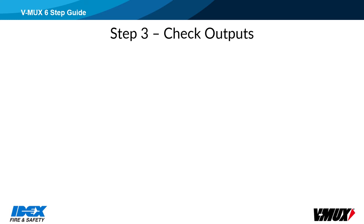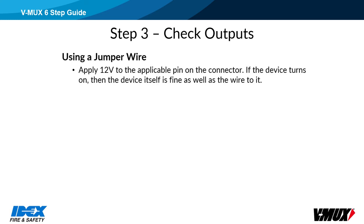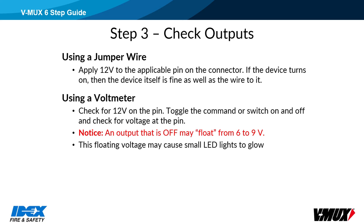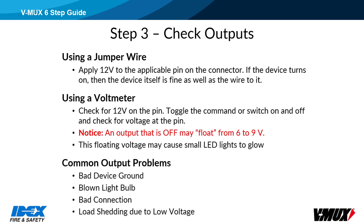Step 3: Check outputs. Remove the output connector from the node and apply 12 volts to the wire going to the device that is not working. Use a source protected with a fuse or breaker in case there is a short circuit. If the device turns on, you know the device and wiring is good. Further investigation is required to determine why the node is not supplying the voltage. Use a voltmeter to check output voltage — when the output is on, it should be near battery source voltage. An output that is off with no load attached may have a floating voltage of up to 9 volts. This floating voltage is caused by internal fault detection circuitry and can cause small LED lights to glow dimly. Common problems are bad device ground, blown light bulb, bad connection, or load shedding due to low voltage.